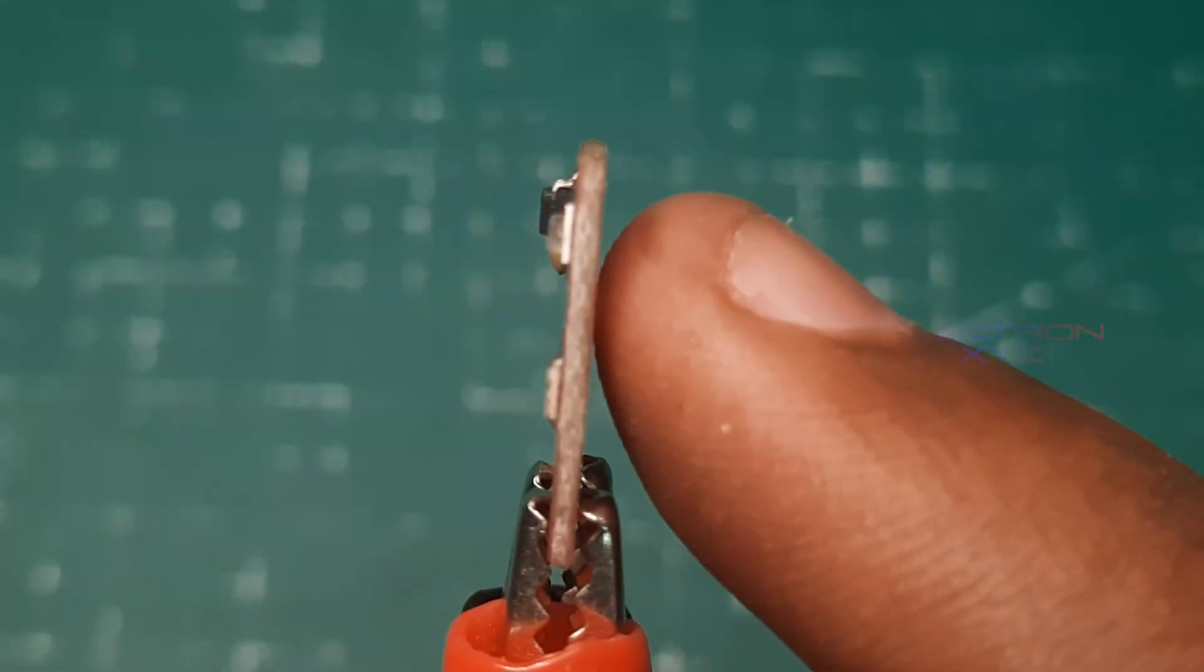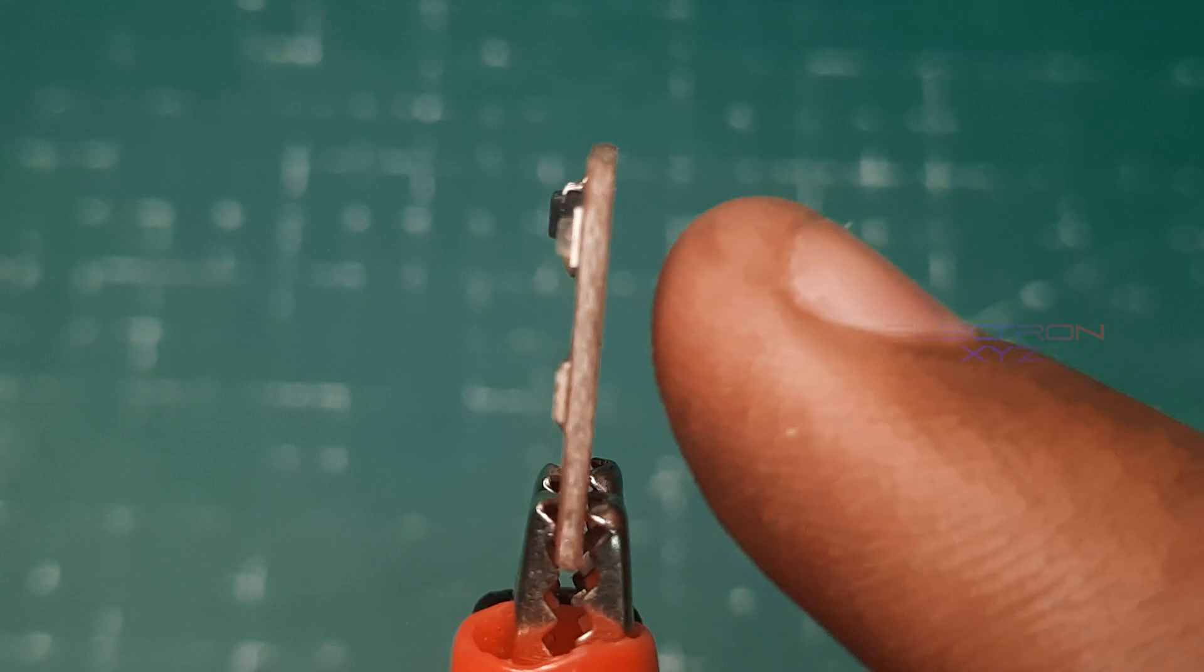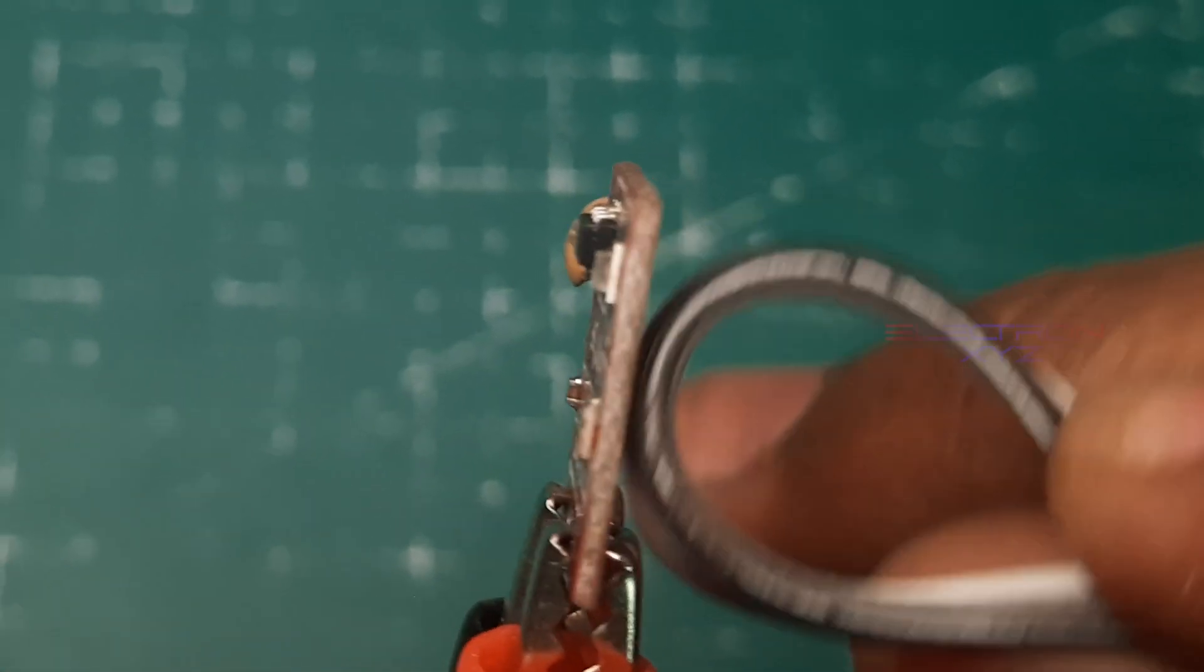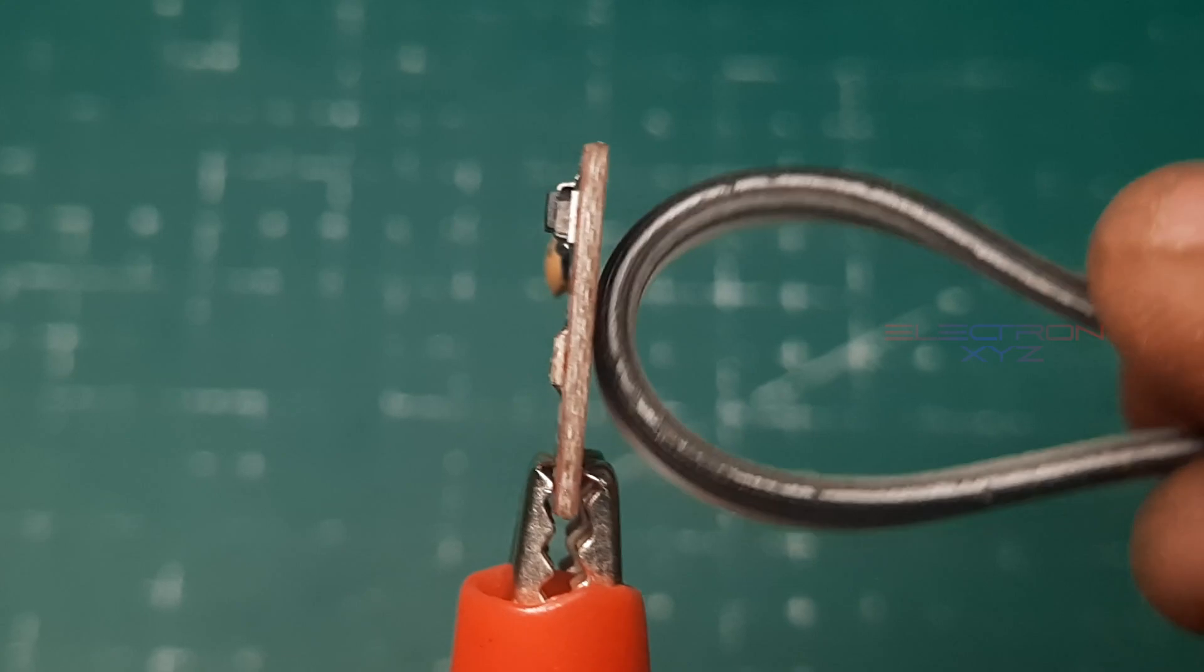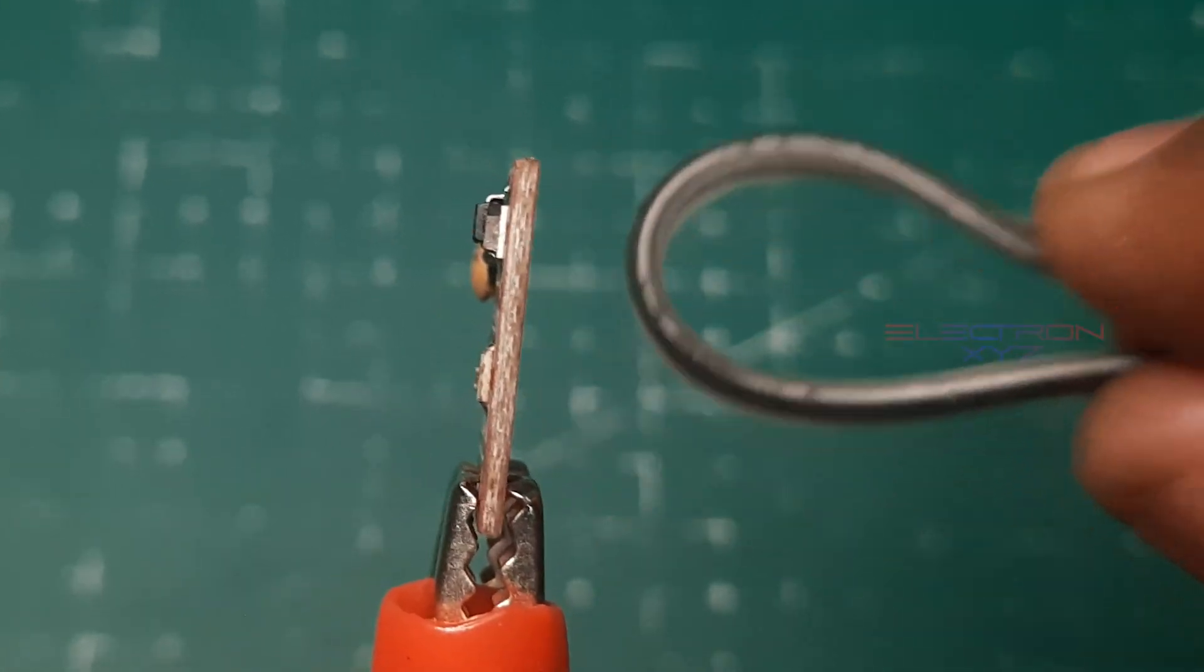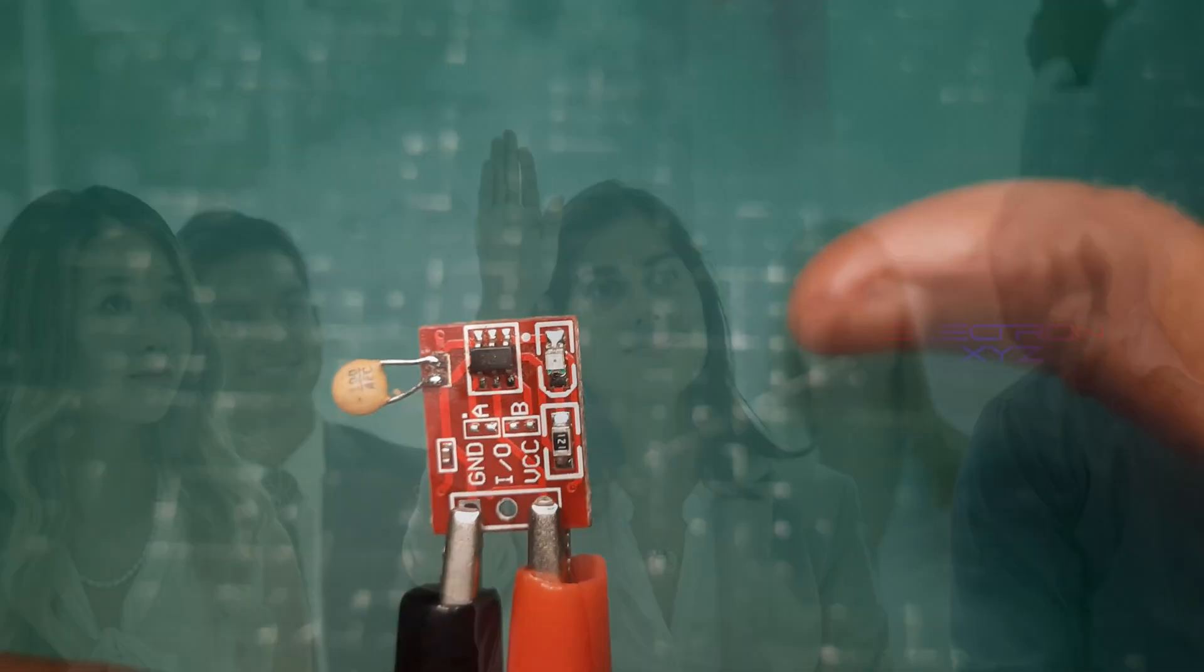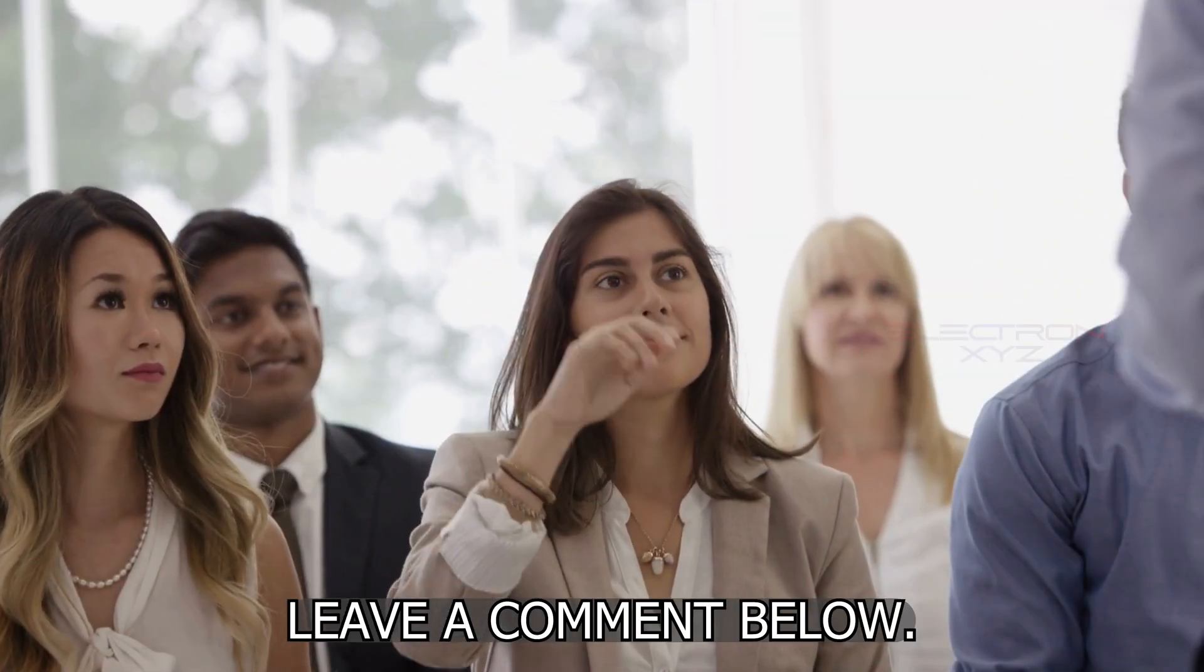Now try it out. No more accidental triggers, just smooth touch control. You've successfully banished those phantom touches. Now you can go forth and create awesome things with your perfectly functioning touch control projects. If you have any questions, leave a comment below. Happy building!